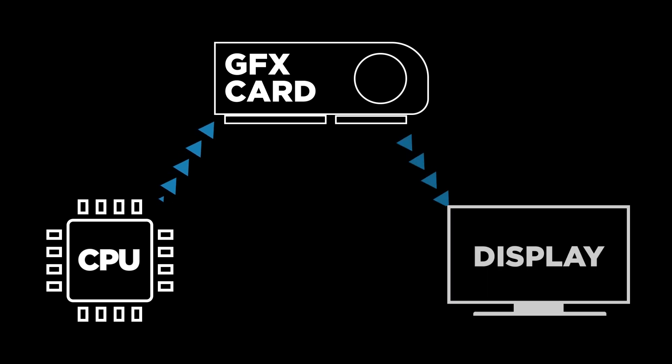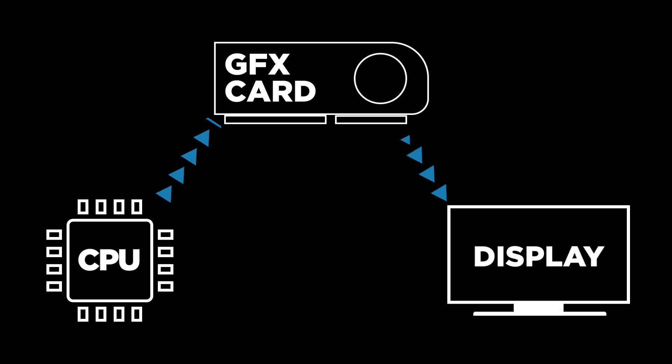The graphics card is responsible for processing and converting data into a visual signal that can be output to your computer's display. The better the graphics card, the faster the data is calculated and an image produced.